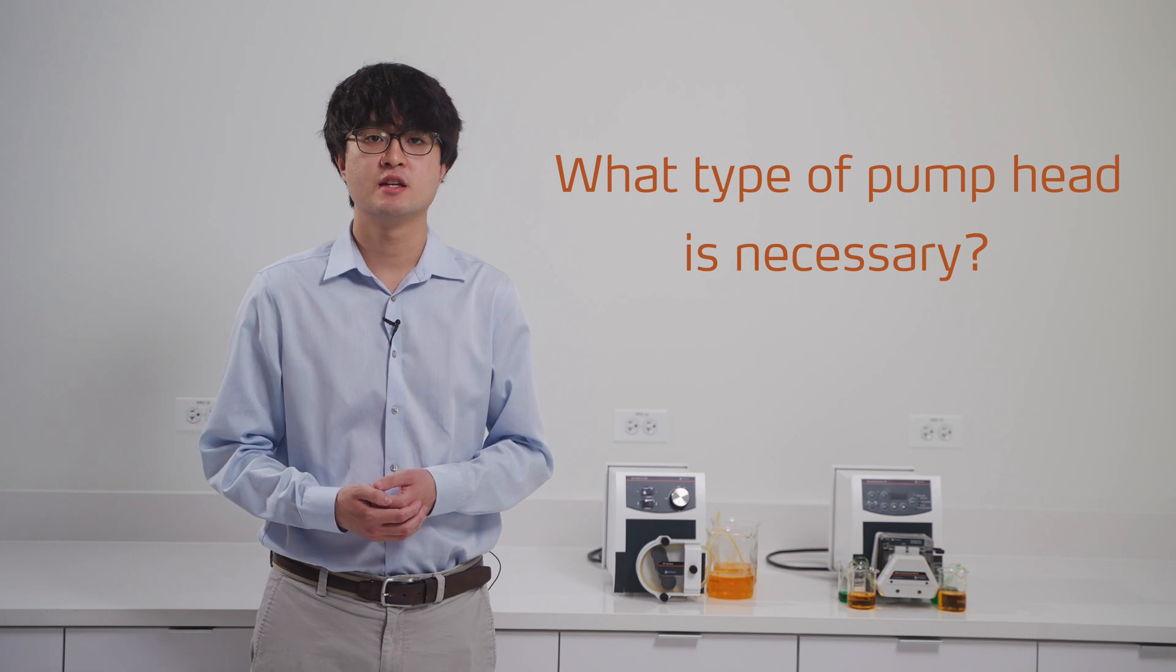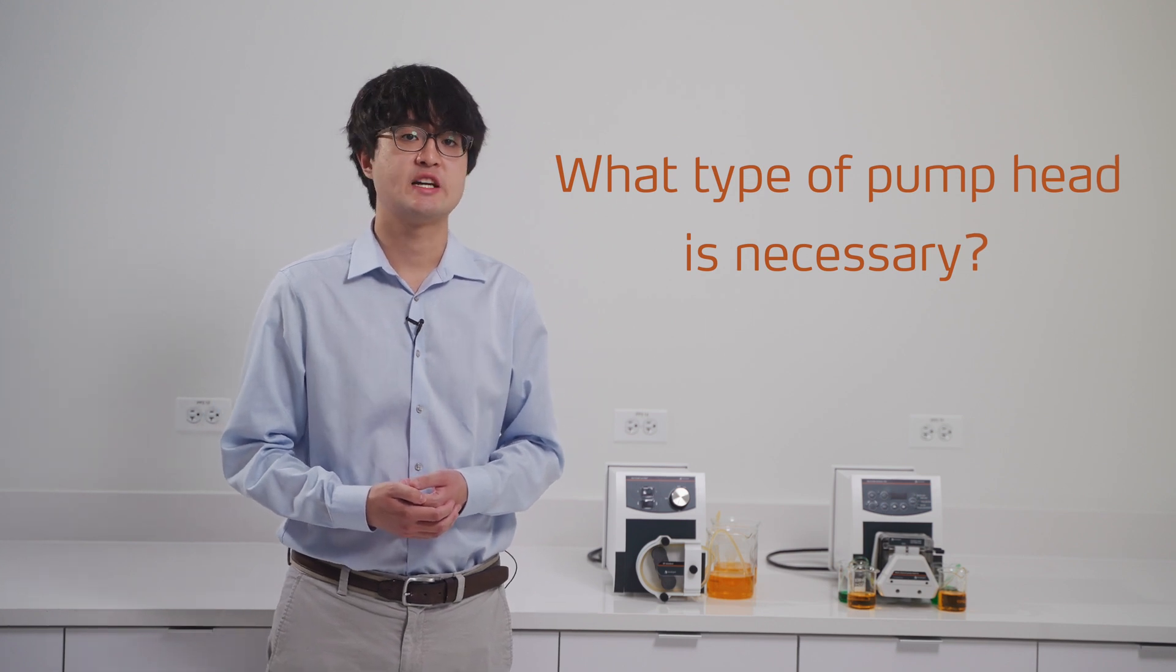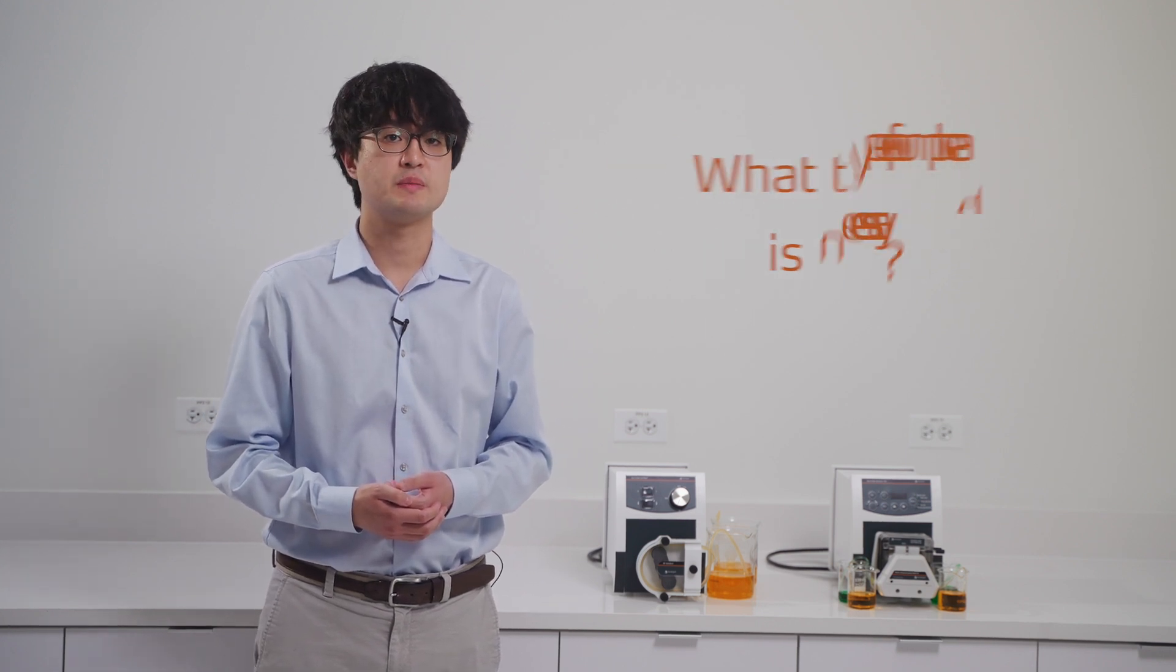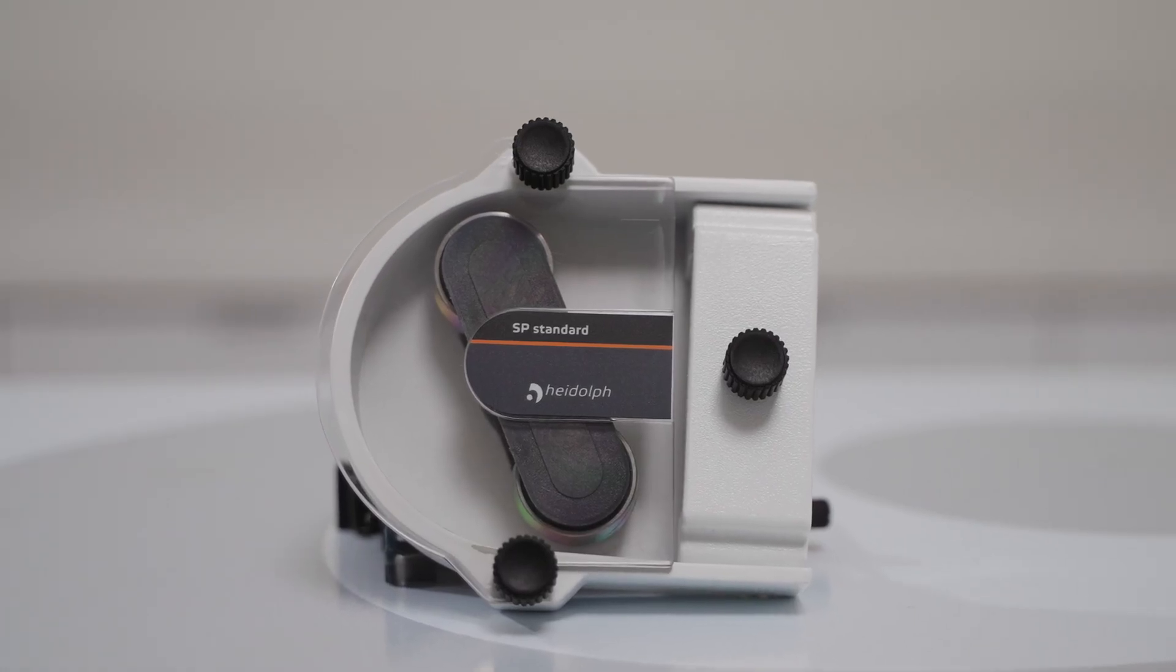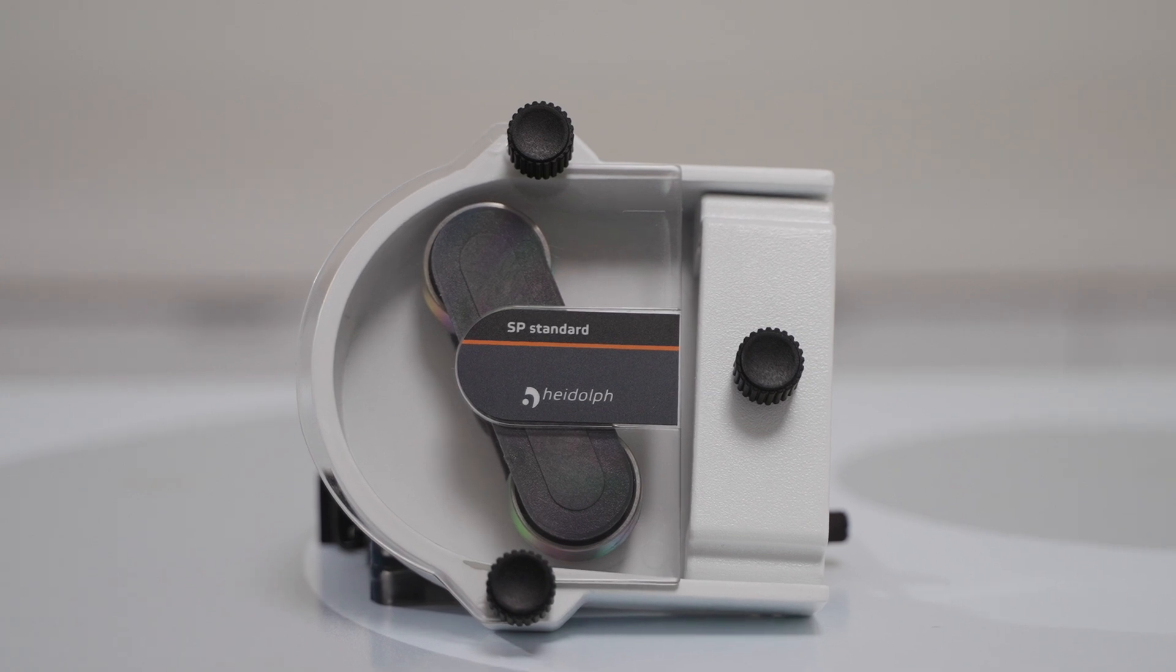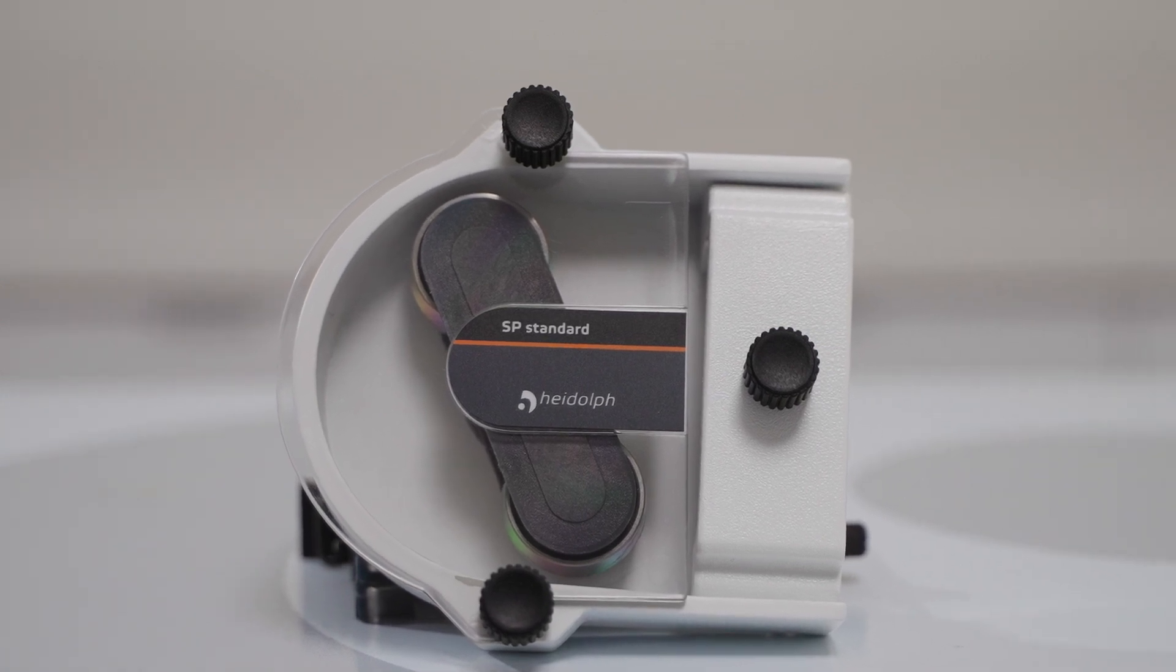The third question we need to answer is what type of pump head is necessary. Currently we offer three single-channel pump heads and three multi-channel pump heads. Let's first look at our single-channel pump heads. Our single-channel pump head that is perfect for everyday tasks is called the SP Standard. The SP Standard is able to be fitted to the standard 1.6 millimeter and 2.5 millimeter wall thickness tubing.